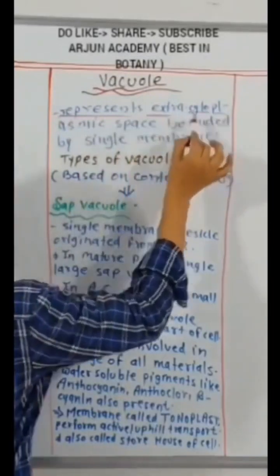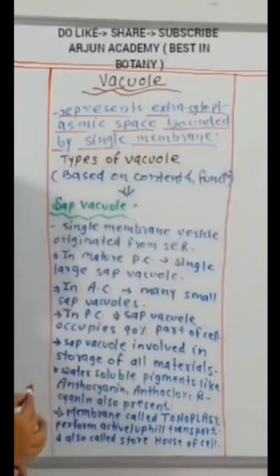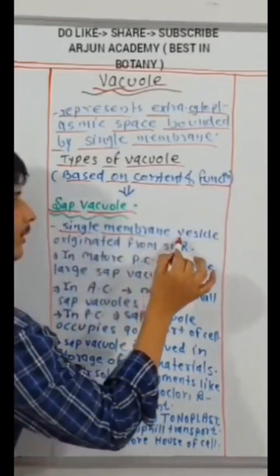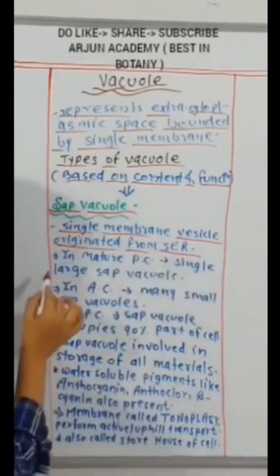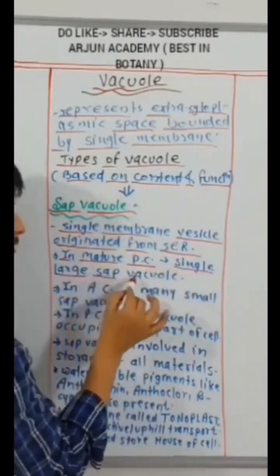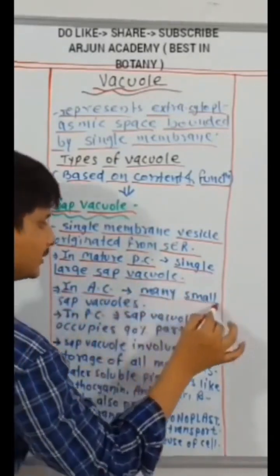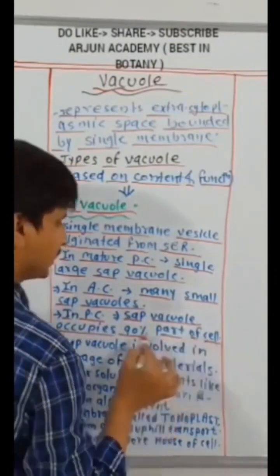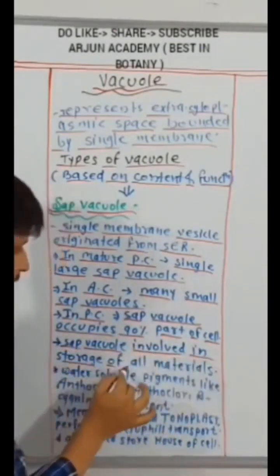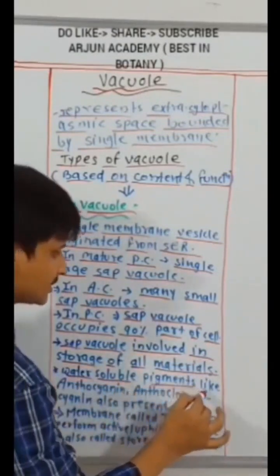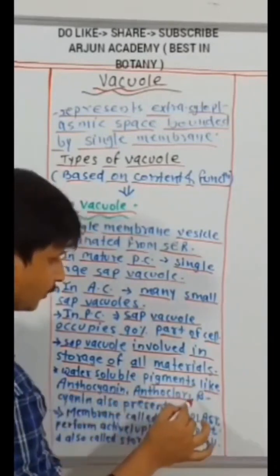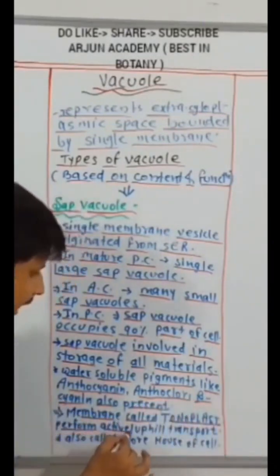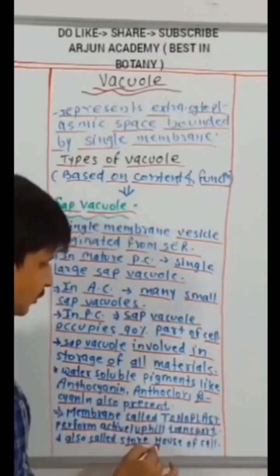Vacuole represents extracytoplasmic space bounded by single membrane. Types of vacuole based on content and function. Sap vacuole, single membrane vesicle originated from smooth endoplasmic reticulum. In mature plant cell, single large sap vacuole present. In animal cell, many small sap vacuoles present. In plant cell, sap vacuole occupies 90% part of cell. Sap vacuole involved in storage of all materials. Water-soluble pigments like anthocyanin, anthoxanthin also present. Membrane called tonoplast. Perform active uphill transport. Also called storehouse of cell.